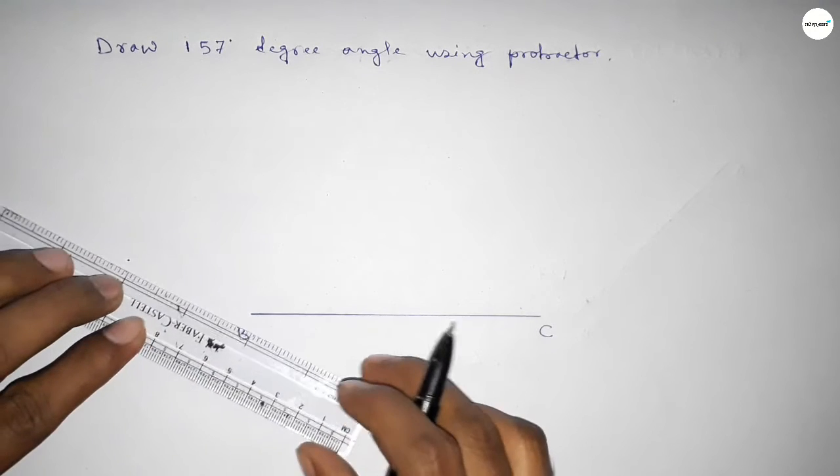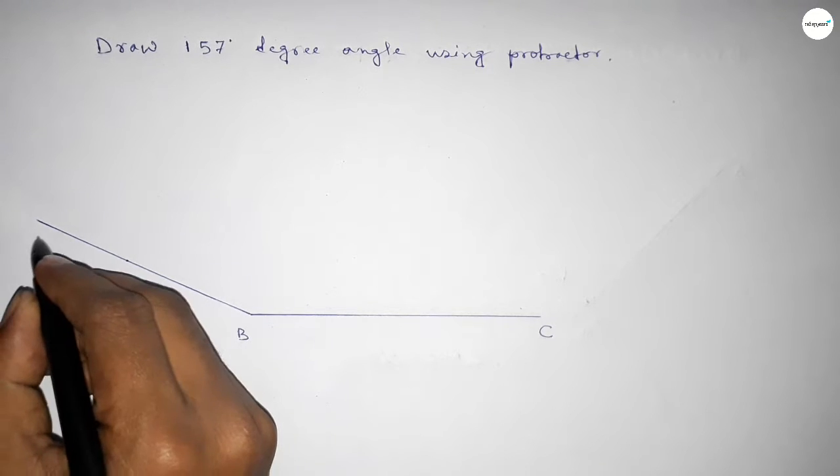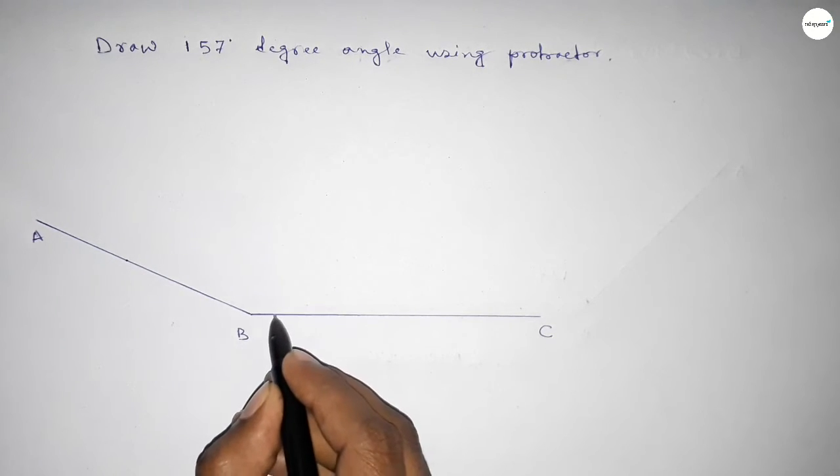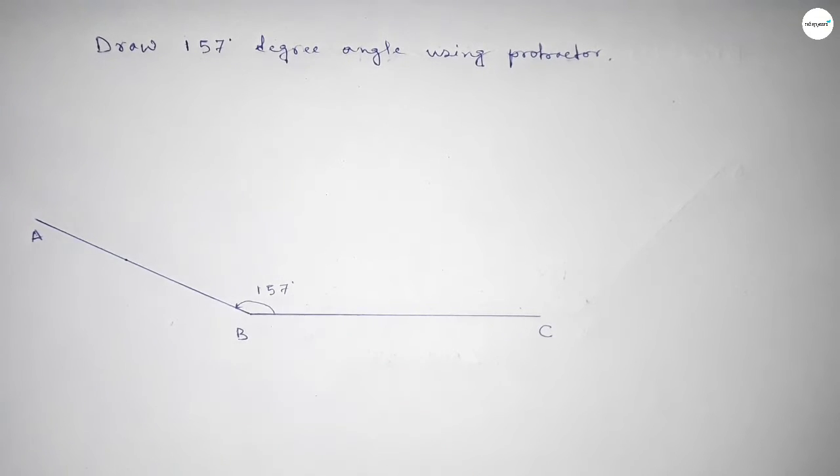Now join this to get 157 degrees, and mark point A here. So angle ABC is 157 degrees.